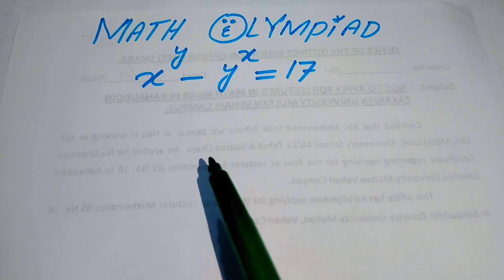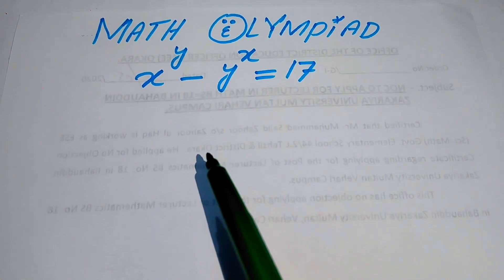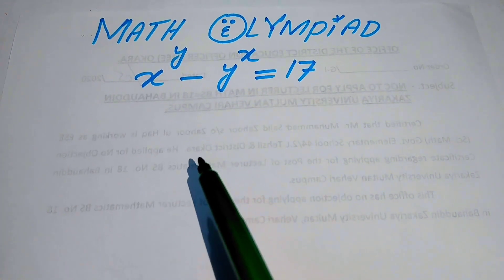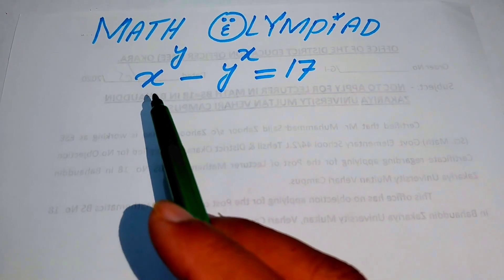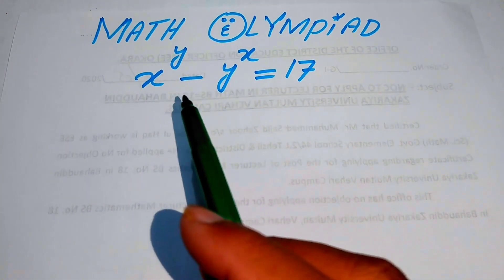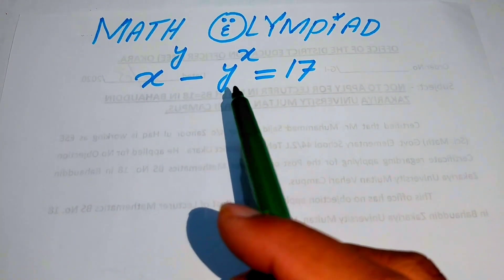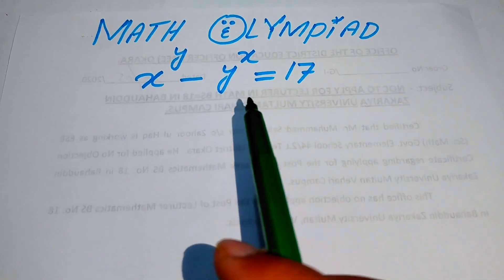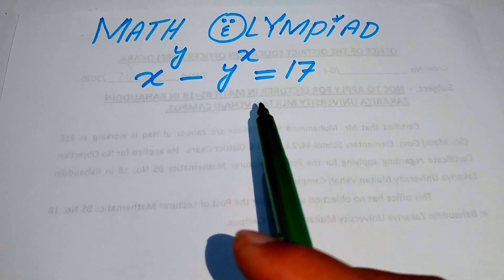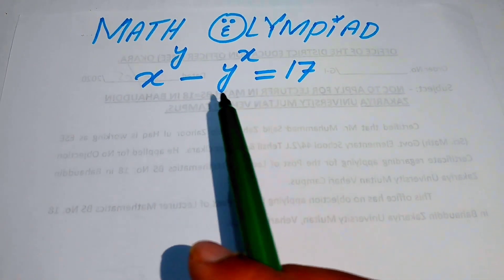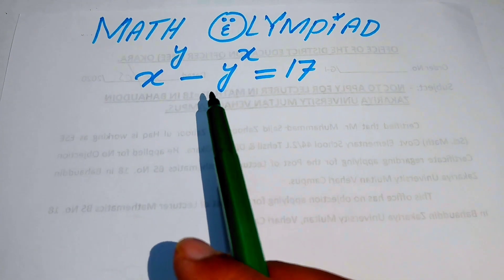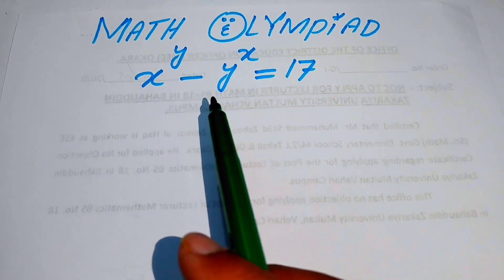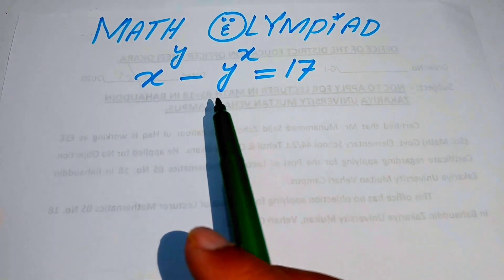Hello everyone, welcome. We will solve this algebra problem where x to the power of y minus y to the power of x equals 17, and we solve this problem for the values of x and y.